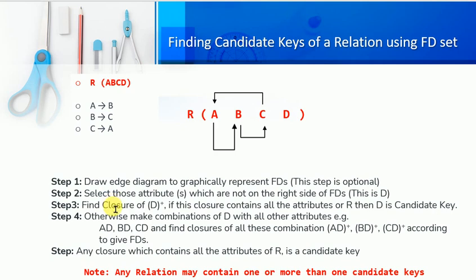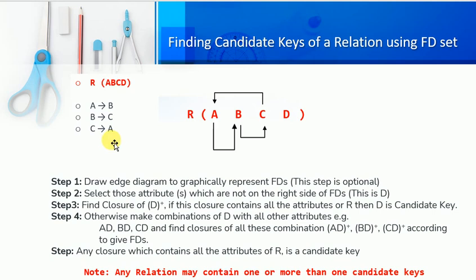Step 2: Select those attributes which are not on the right side of any functional dependency. Step 3: Find the closure of attribute D. If this closure contains all the attributes of R — that is, all four attributes A, B, C, D — then D is the candidate key.